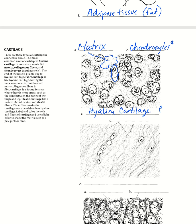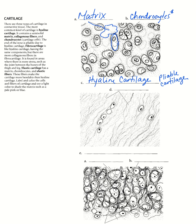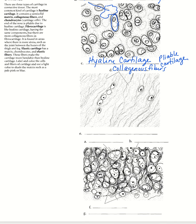Hyaline cartilage is a very pliable cartilage but it's still pretty thick. This is what causes the thick bulb at the end of your nose, and it's also found at the ends of articulating bones like in your joints. Below that you'll see we have a few chondrocytes but a lot of collagenous fibers — a lot of collagen in this cartilage sample — and because of all these fibers it is referred to as fibrocartilage.